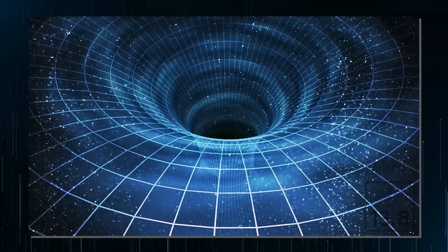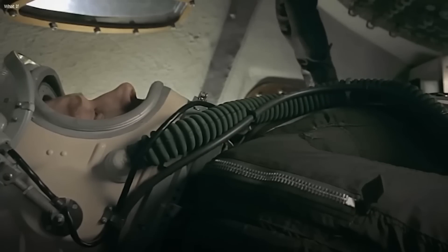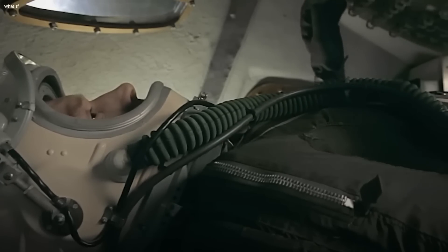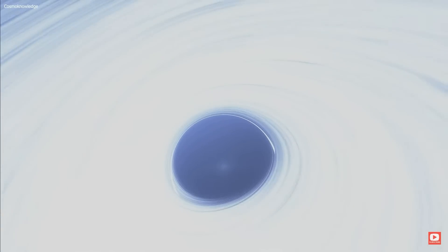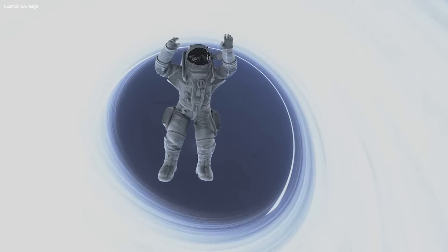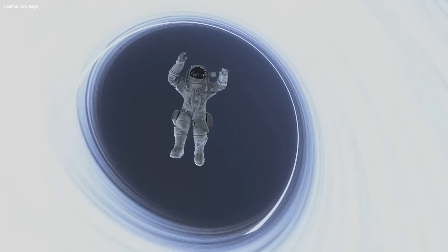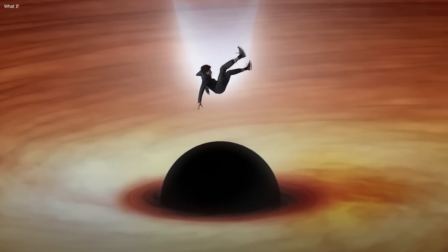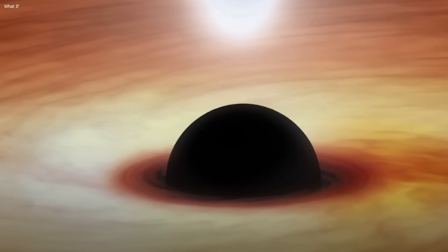As you approach the event horizon, time slows down a lot compared to what an observer far away from the black hole would see. This means that the closer you get, the slower time would appear to be passing by. Approaching the event horizon, the most powerful gravitational forces in the universe come into play and they'll affect everything. This means as you continue your descent into the black hole, everything around you will become more and more distorted until it eventually reaches a point where it is unrecognizable.